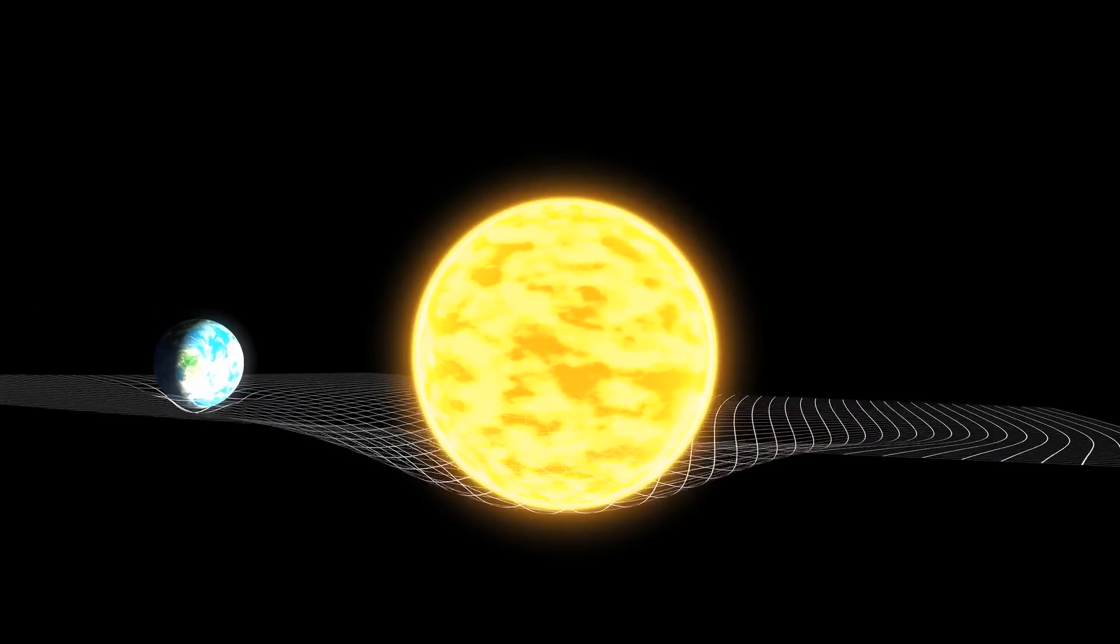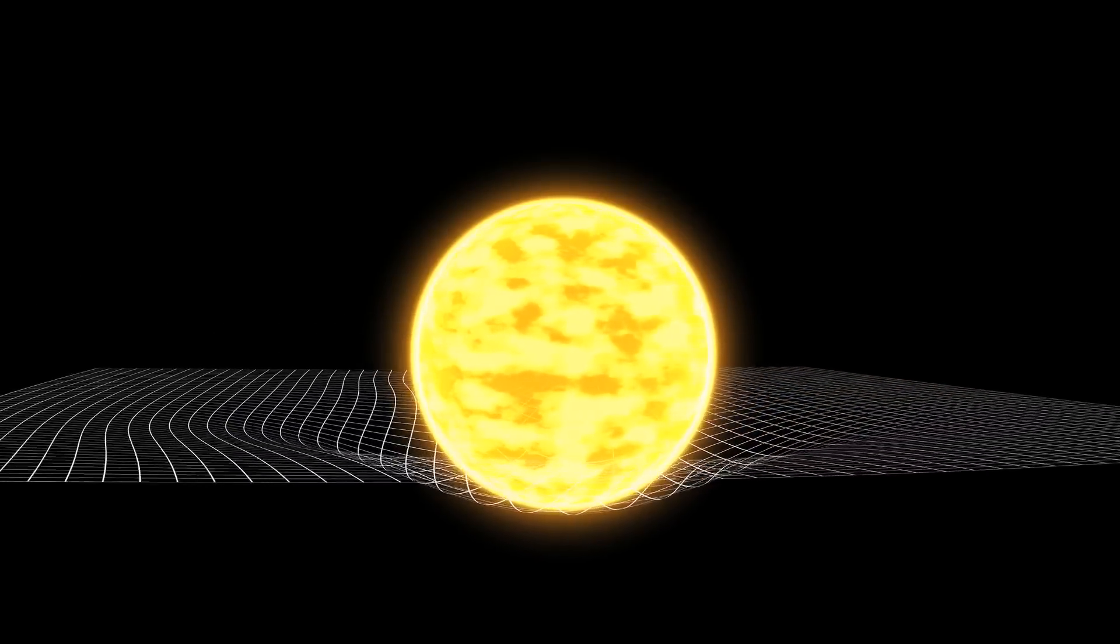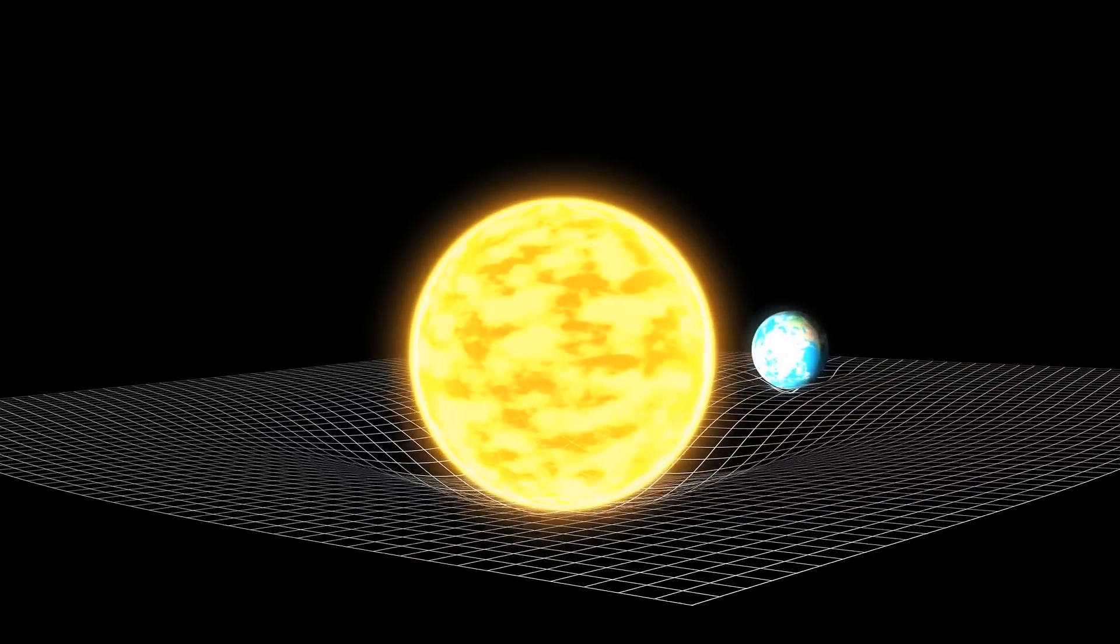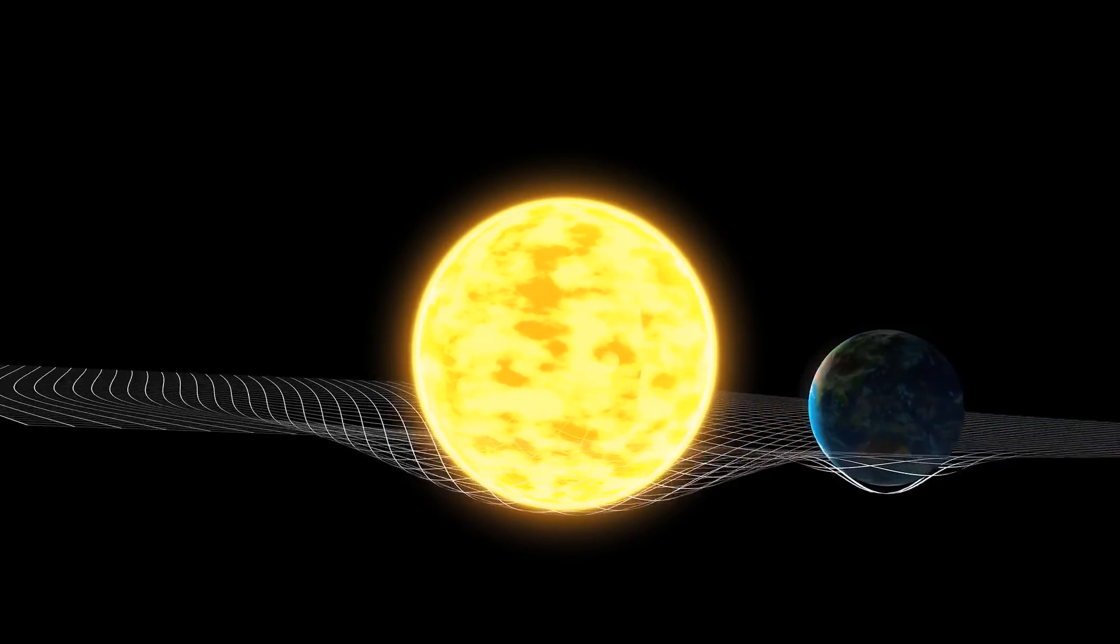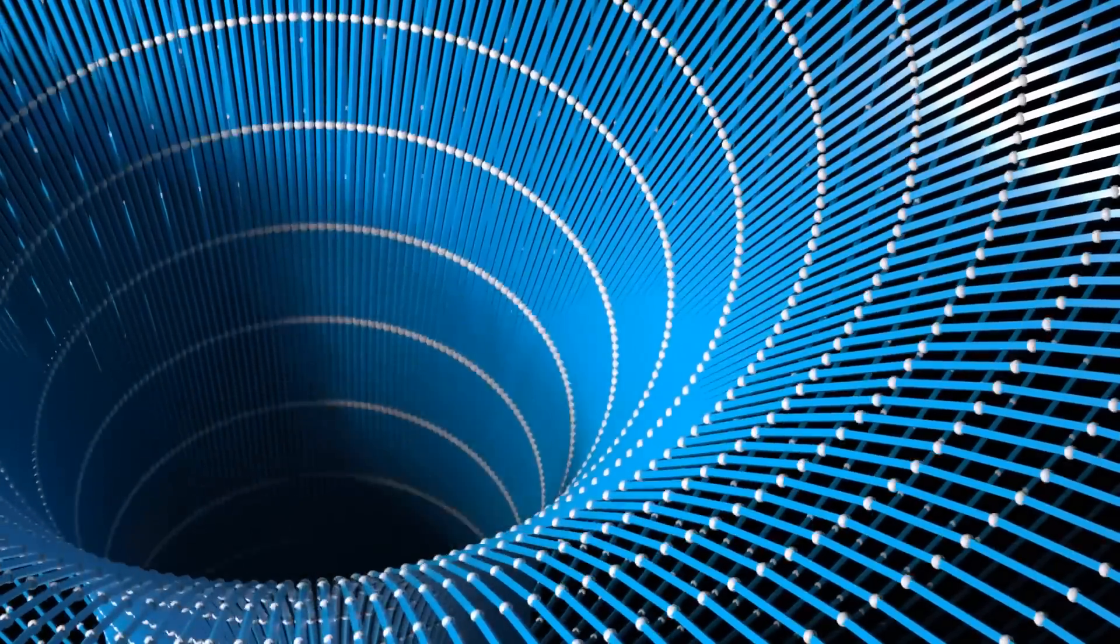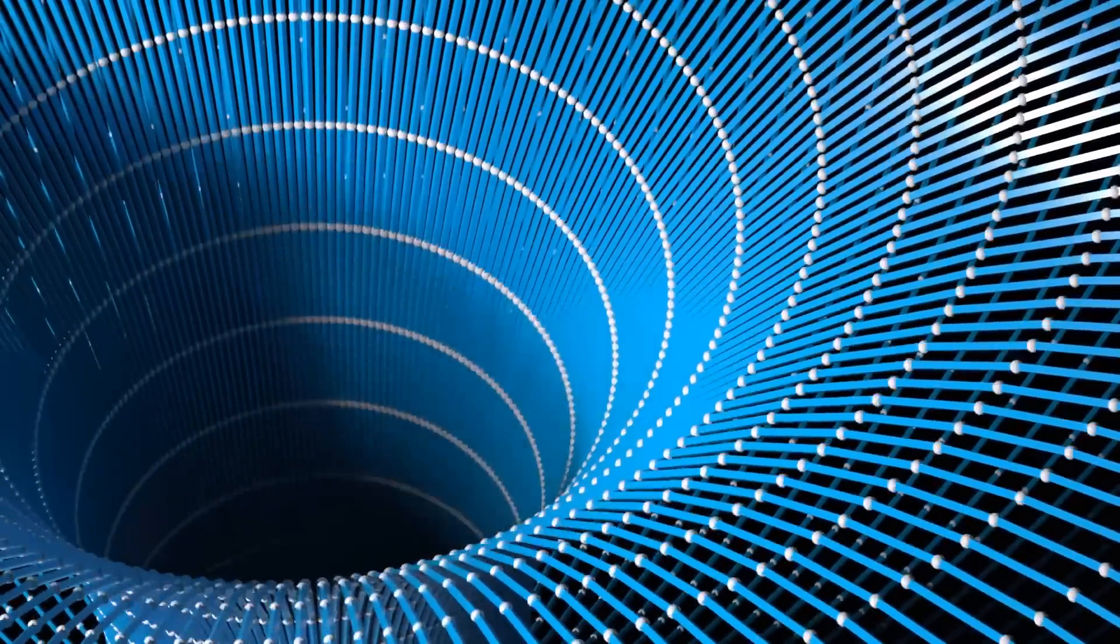Einstein's general relativity solved this by redefining gravity as the warping of space-time around an object, creating a well that other things fall toward. This theory worked where Newton's didn't, while still fitting with much of what Newton had observed.